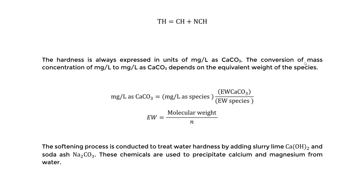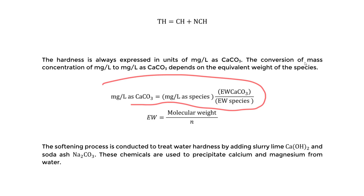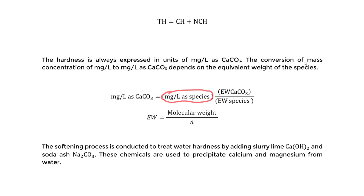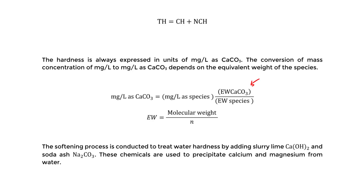The conversion from mg per liter to mg per liter as calcium carbonate depends on the equivalent weight of the species. To convert, we take the mg per liter concentration of whatever species we're looking at — maybe calcium or magnesium — multiply by the equivalent weight of calcium carbonate on top, and divide by the equivalent weight of the species on the bottom. The equivalent weight of calcium carbonate is always 50.